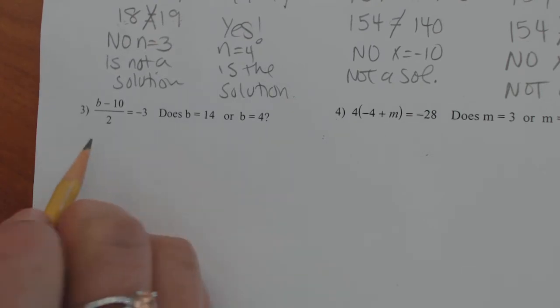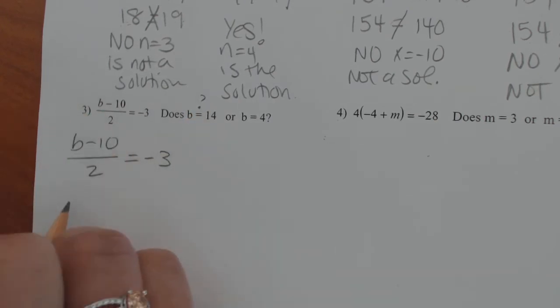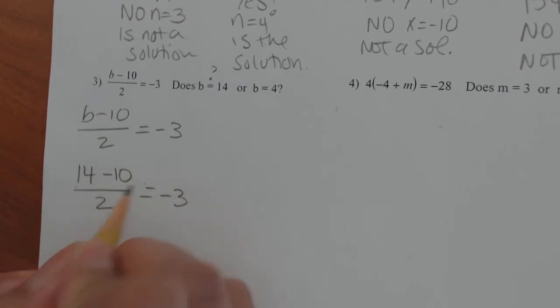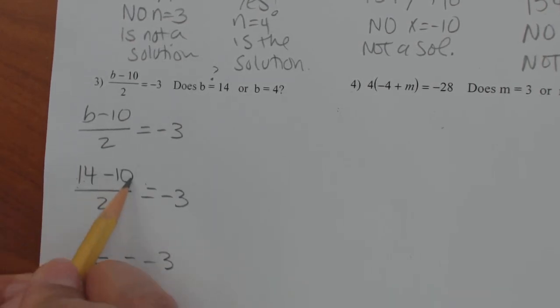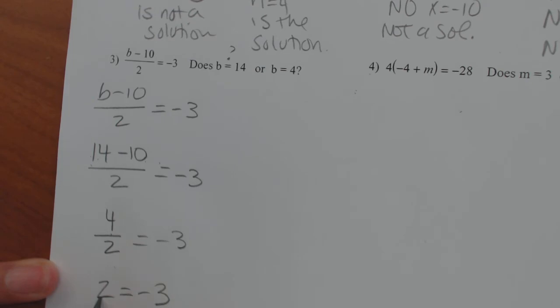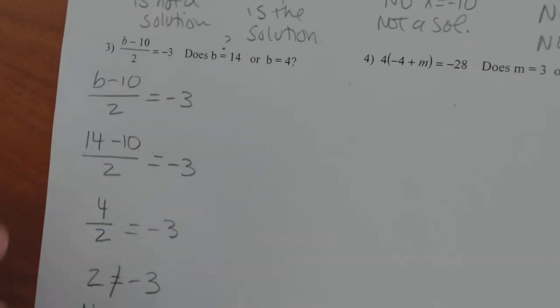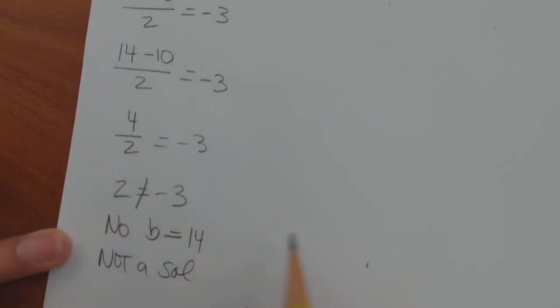Next, number 3. b minus 10 divided by 2, we're going to check to see if it equals negative 3. So let's see if b is 14. So 14 minus 10 over 2, does that equal negative 3? 14 minus 10 is 4 divided by 2. Please notice how I'm doing this in two steps. I first reduced the numerator. 14 minus 10, which is 4. Now I am going to divide 4 by 2, which is 2. Does 2 equal negative 3? No, that does not equal. So no, b does not equal 14, not a solution.